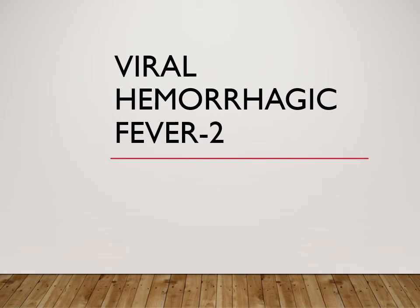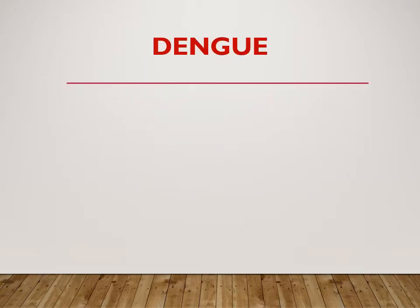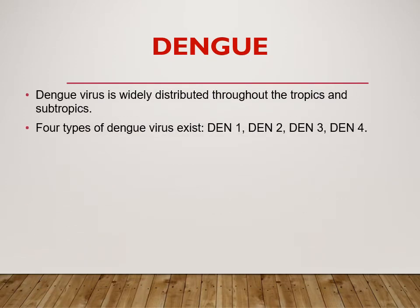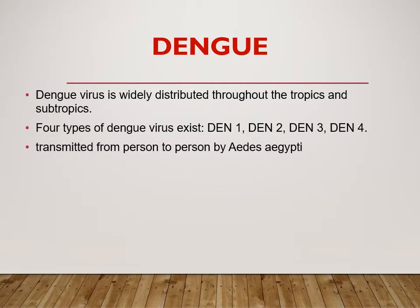Good morning friends. This is a continuation of the previous video on viral hemorrhagic fever. In this we will learn in detail about what infections can lead to this condition. First is dengue, caused by the dengue virus. Mainly four types of dengue virus are circulating — types one, two, three, four — and type five has also been isolated in 2013. This virus is transmitted by the Aedes aegypti mosquito from person to person.